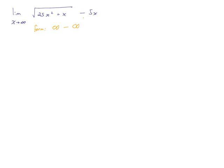When I'm looking at this, one of the things that pops out is that when I'm taking the square root of 25x squared, it looks like it would be 5x. But this plus x is going to be doing something to my limit. It kind of looks like maybe it's 5x minus 5x, going towards zero, but I have a feeling this plus x is going to affect the behavior, so maybe the limit's not going to be zero.